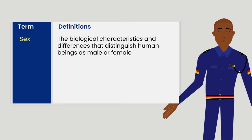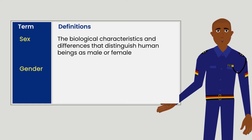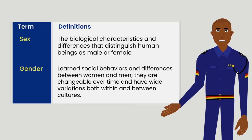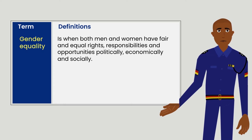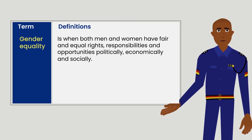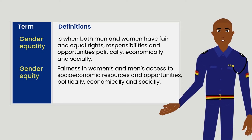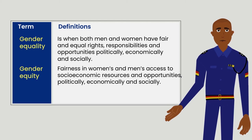A table on the screen will show the terms and their respective definitions. Sex: the biological characteristics that distinguish human beings as male or female. Gender: learned social behaviors and differences between women and men; they are changeable over time and have wide variations both within and between cultures. Gender equality: when both men and women have fair and equal rights, responsibilities and opportunities — politically, economically and socially. Gender equity: fairness in women's and men's access to social economic resources and opportunities — politically, economically and socially.